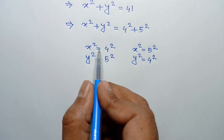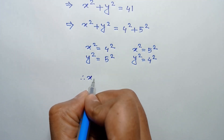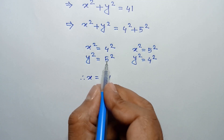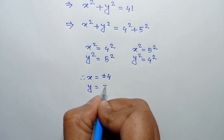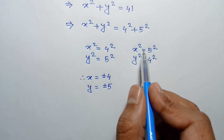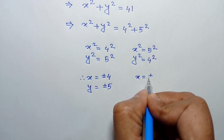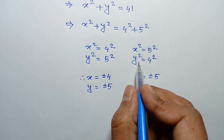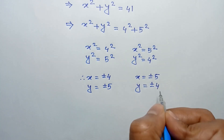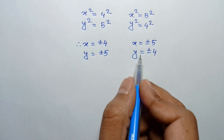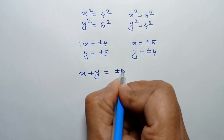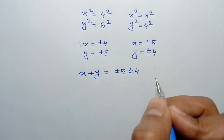Taking the square root of both sides, we have x equals plus or minus 4, and from the other case x equals plus or minus 5, and y equals plus or minus 4. In both cases, x plus y is equal to plus or minus 5 plus or minus 4.